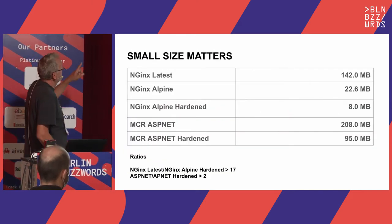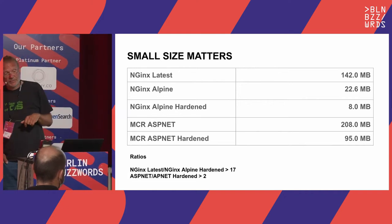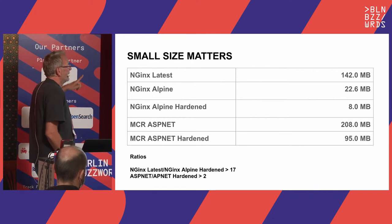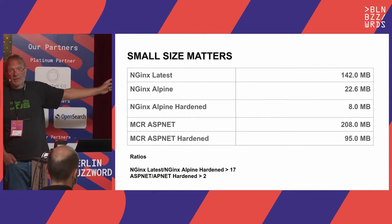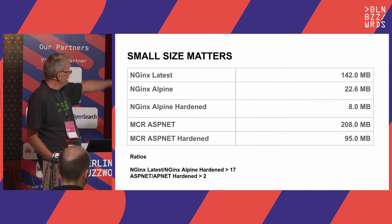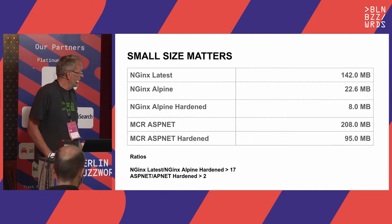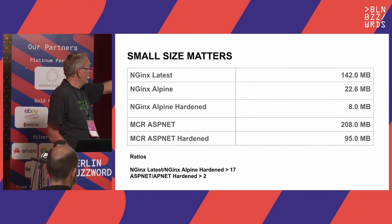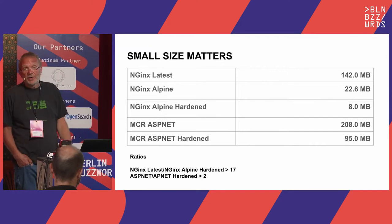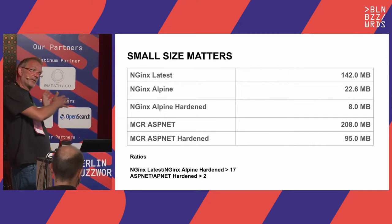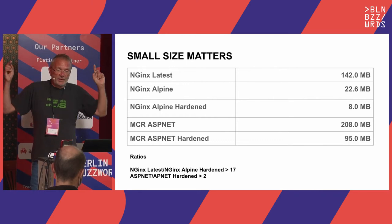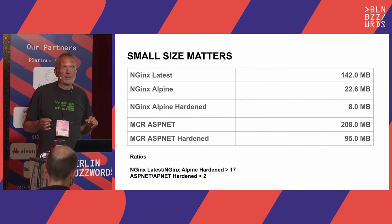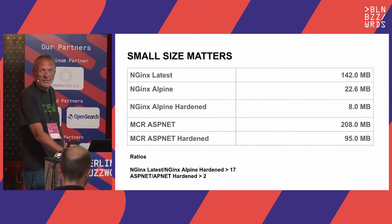Now let's look at the sizes. Nginx latest is 142 megabytes. On Alpine it's 22.6 megabytes. The hardened version has only 8 megabytes — that's 17 times smaller than the latest image. With the ASP.NET example we optimized by at least a factor of 2. This means if we have this step in our deployment pipeline, the volume of containers shrinks by a factor of 10 or more, which is a big step in creating faster pipelines.